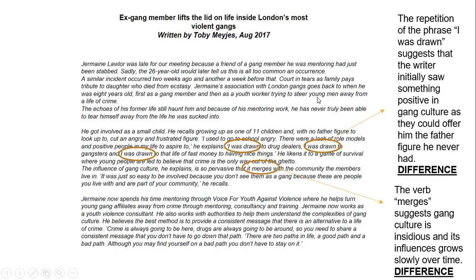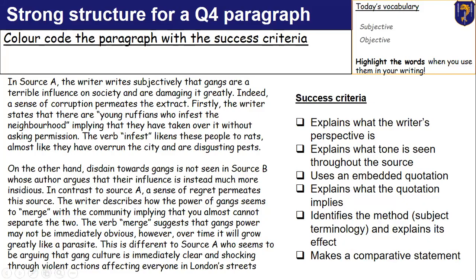Pause the video now to go over the two sources again and make sure every annotation you've got has that comparative feature, what the perspective is, and the method attached to it. Now let's look at how we would put together an answer. This is not a complete answer — I would argue this is your first two paragraphs. You need to do at least four paragraphs in total, ideally six, which is three comparisons in total. Have a look at the success criteria: explain what the writer's perspective is, explain the tone, use an embedded quotation, explain the quotation, the method, and make a comparative statement.